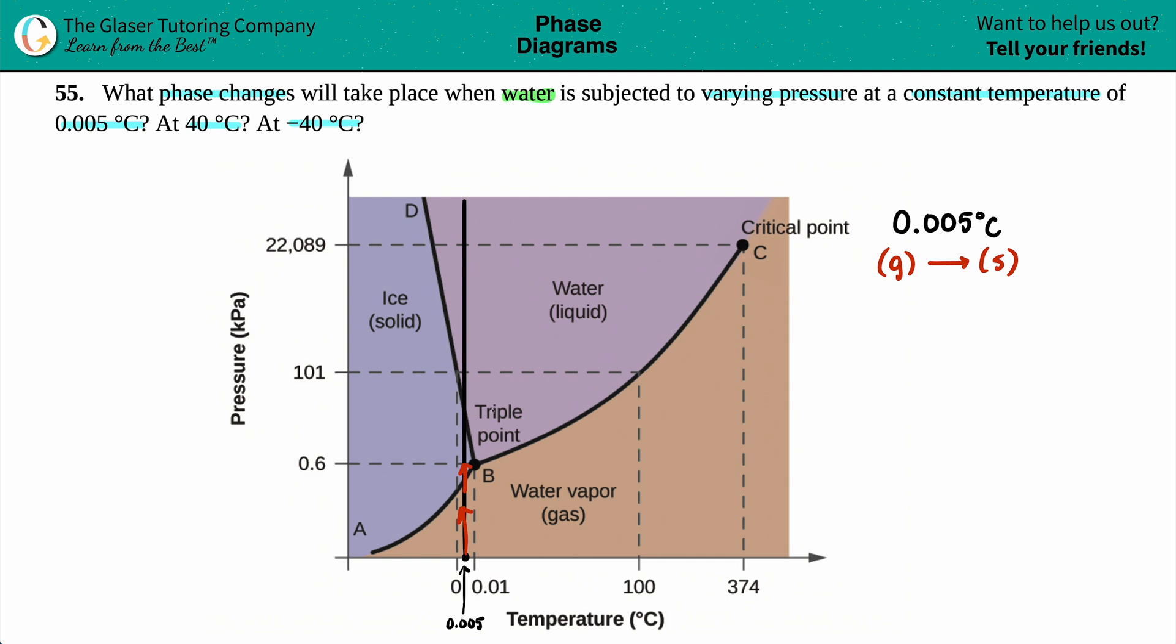Now let's just see, is there any other phase changes? Well, if I keep going upward, I can go to a different color, right? I cross over this line, so I can actually phase change twice, depending on what types of pressure I'm at. So I can go from a gas to solid. This would be at low KPA, relatively speaking.